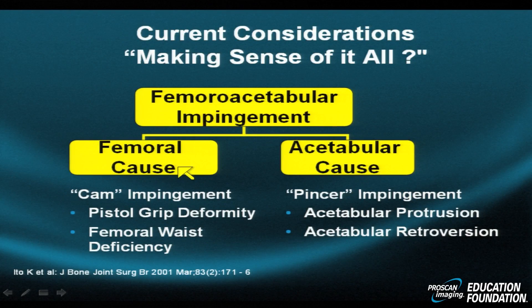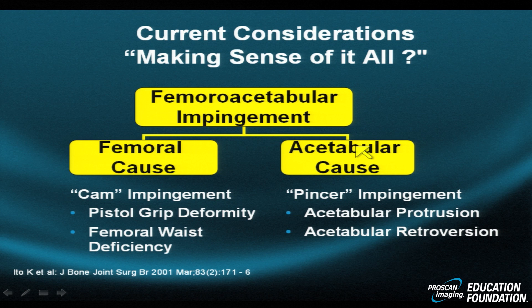Intrinsic impingement could also occur if the ligamentum teres ruptures and forms a ball in the dependent portion of the joint due to gravity. FAI can also be divided not into cam and pincer types, but simply by which bony elements are the dominant abnormalities — femoral dominant or acetabular dominant. Acetabular dominant causes are associated with pincer impingement.